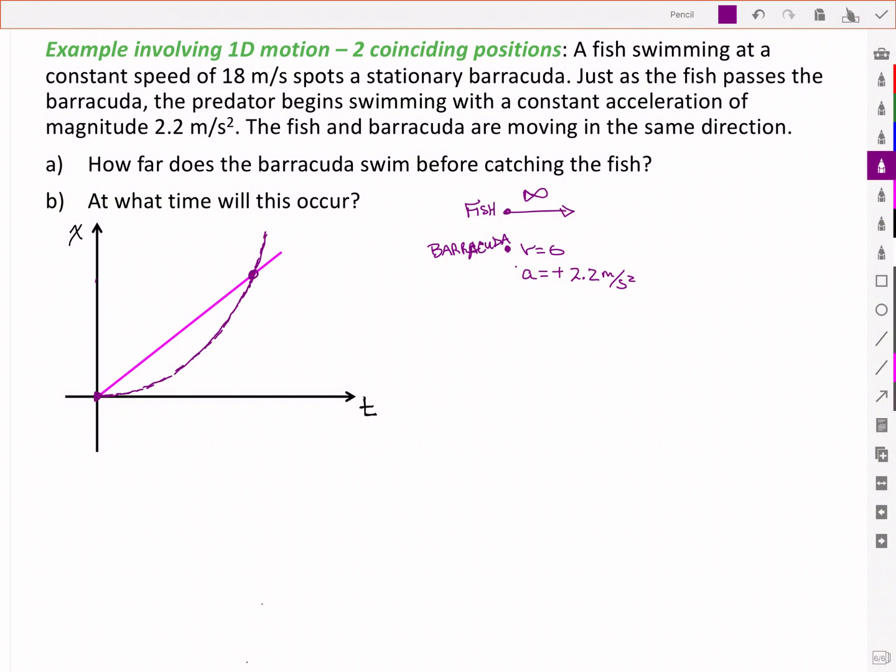So the parameters that we have here, this is the position at which the fish and the barracuda have the same position. And that's going to happen at some time t that we'll call tc, when the barracuda catches the fish.